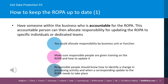For example, the head of HR is responsible for making sure the ROPA for HR data is kept up to date. The head of marketing is responsible for marketing data and so on. You should make sure that responsible people are given training on the ROPA and how to update it. This is important so that they know your organisation's responsibilities in relation to ROPAs, and know how to identify a change in processing activity and when a corresponding update to the ROPA needs to take place.